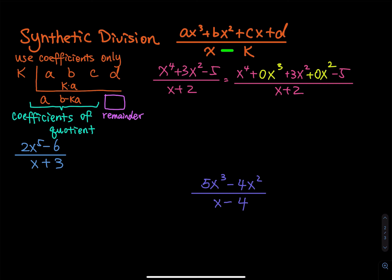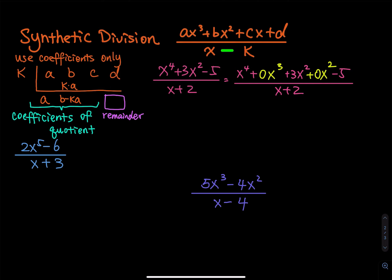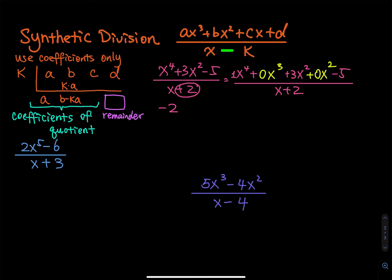Now for synthetic division, we only need to use the coefficients. For the dividend, we have a one, so we put a one right here. We have: 1, 0, 3, 0, negative 5. This is divided by x minus k, but we have a plus two, so k is equal to negative two. We have a negative two because when you put it on the synthetic division, you have to use negative two. Don't make mistakes on this — it is so easy to forget the plus and minus issue.